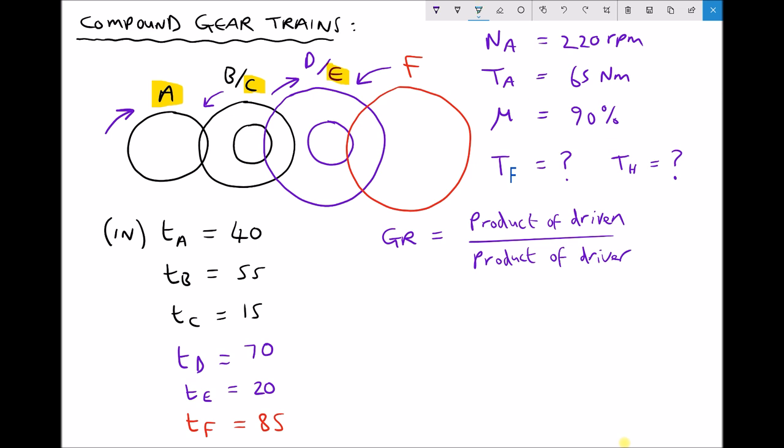So next, which are our driven gears? Well, our driven gears are all of the ones that are being driven by the drivers. So A drives B, A is the driver, B is the driven. C drives D, C is the driver, D is the driven. E drives F, E is the driver, F is the driven.